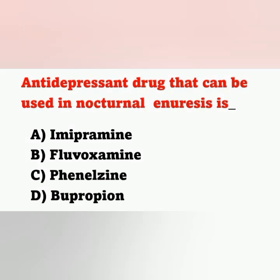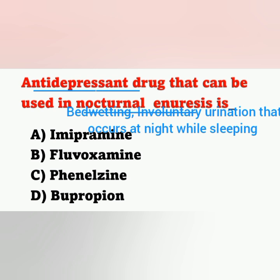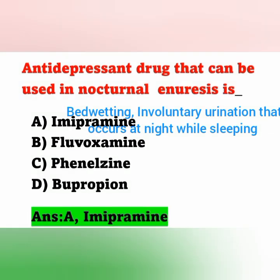The next question: The antidepressant drug that can be used in nocturnal enuresis is — Option A: imipramine; Option B: fluvoxamine; Option C: phenelzine; Option D: bupropion. Nocturnal enuresis means involuntary urination that occurs at night, also known as bed wetting. The correct answer is imipramine, Option A.